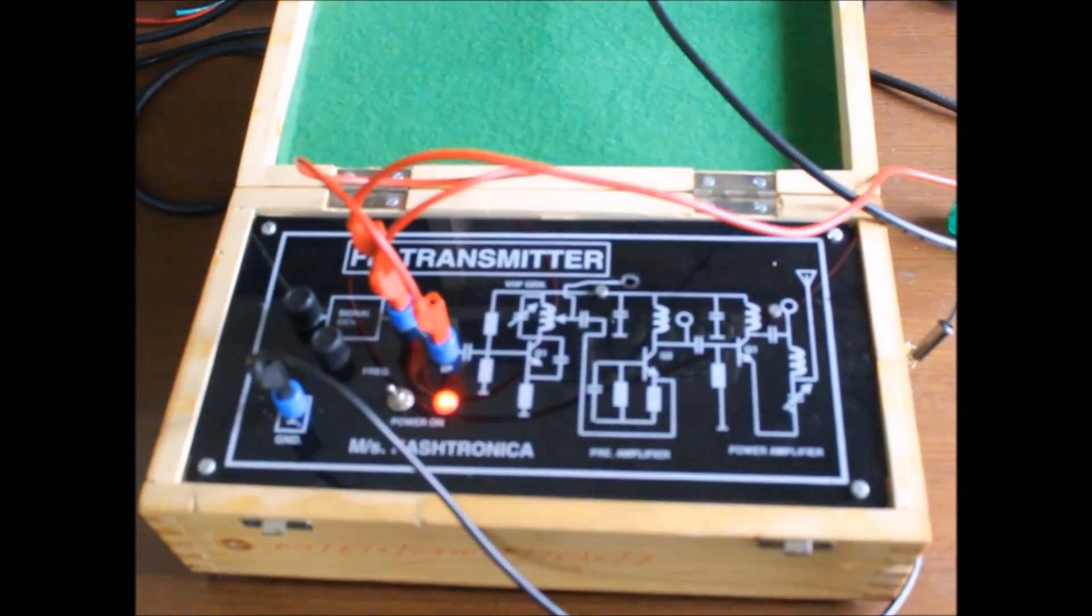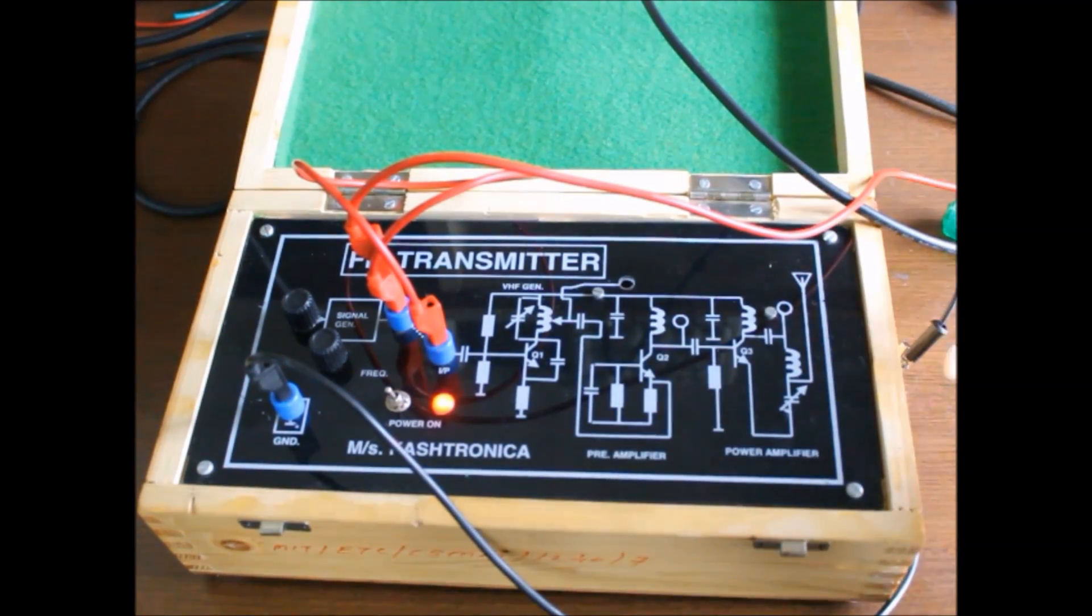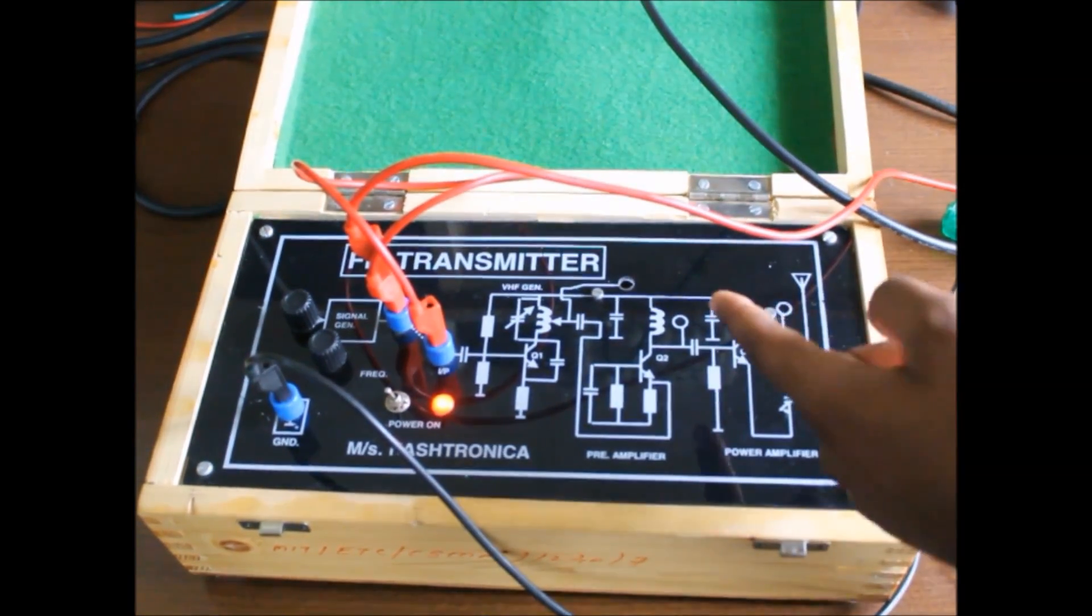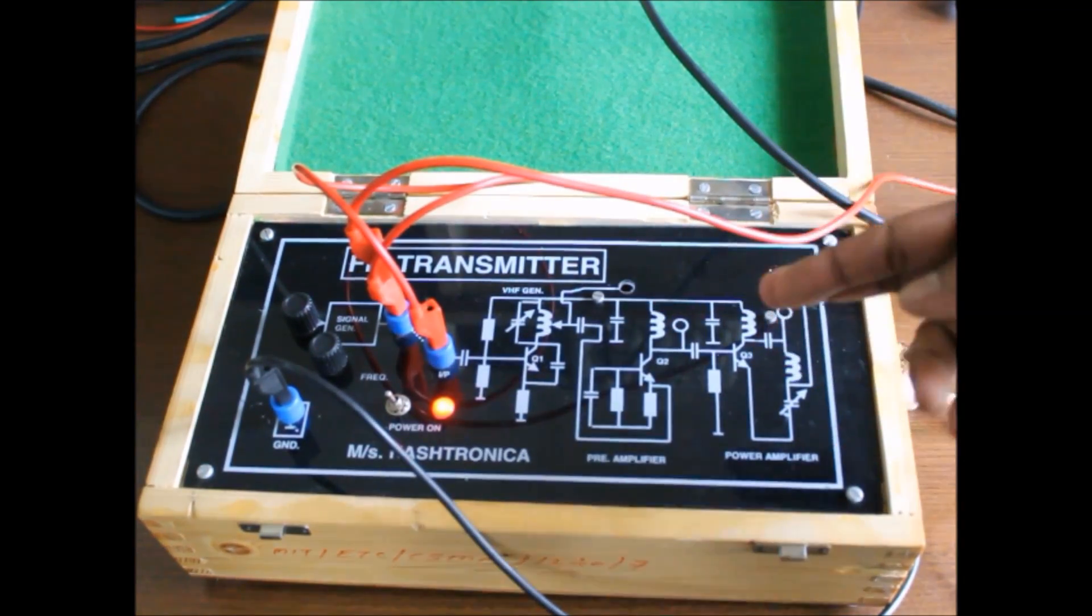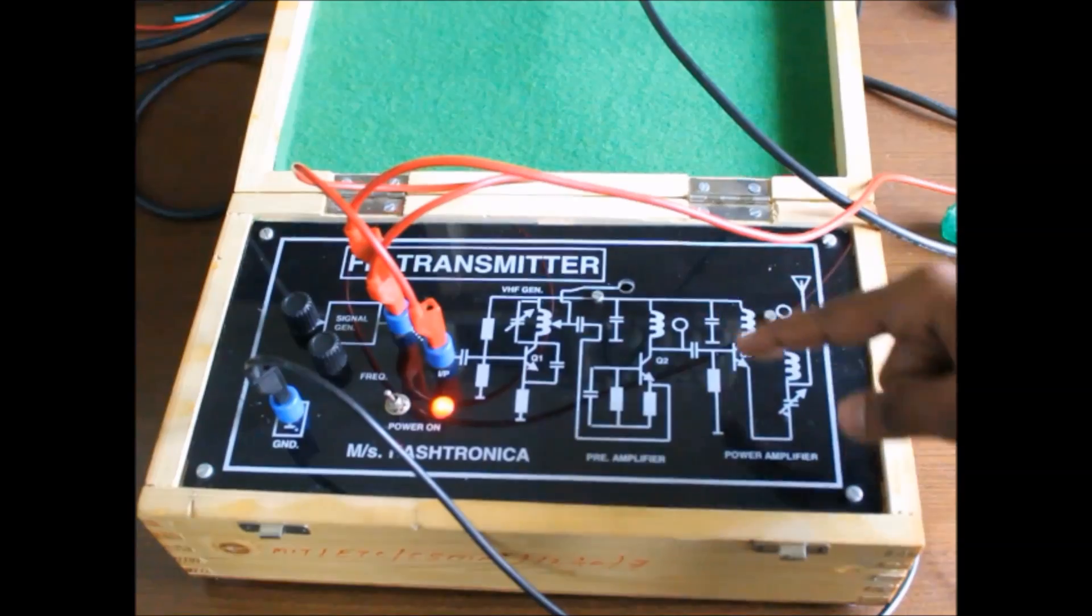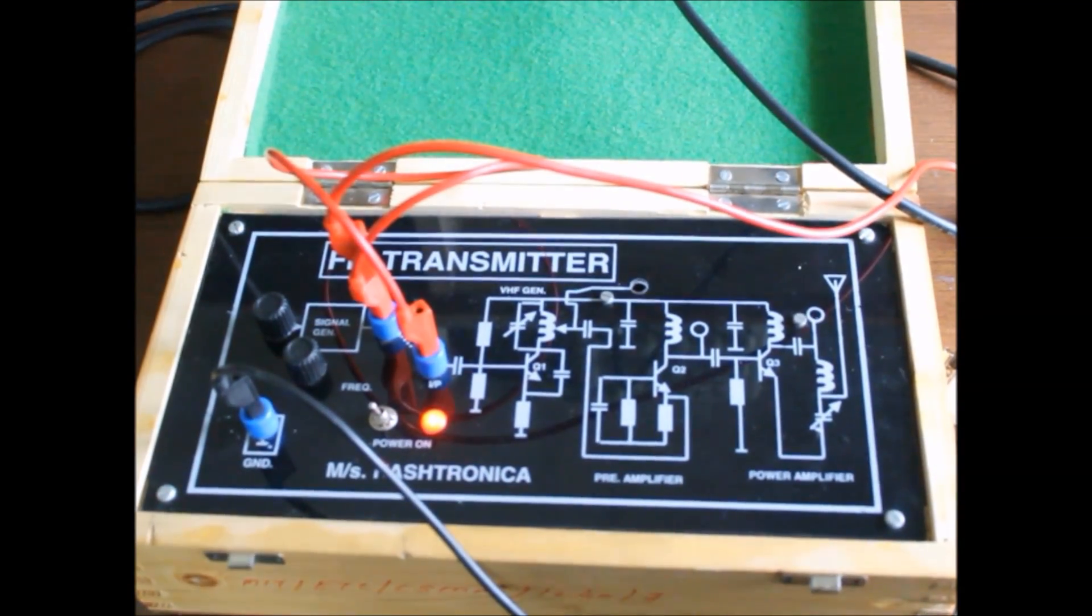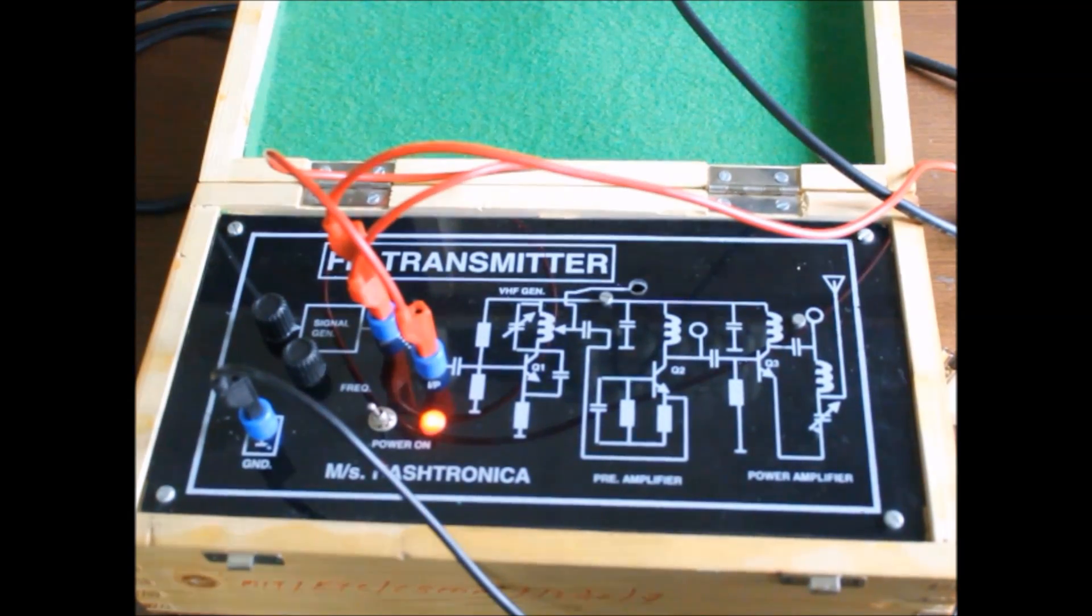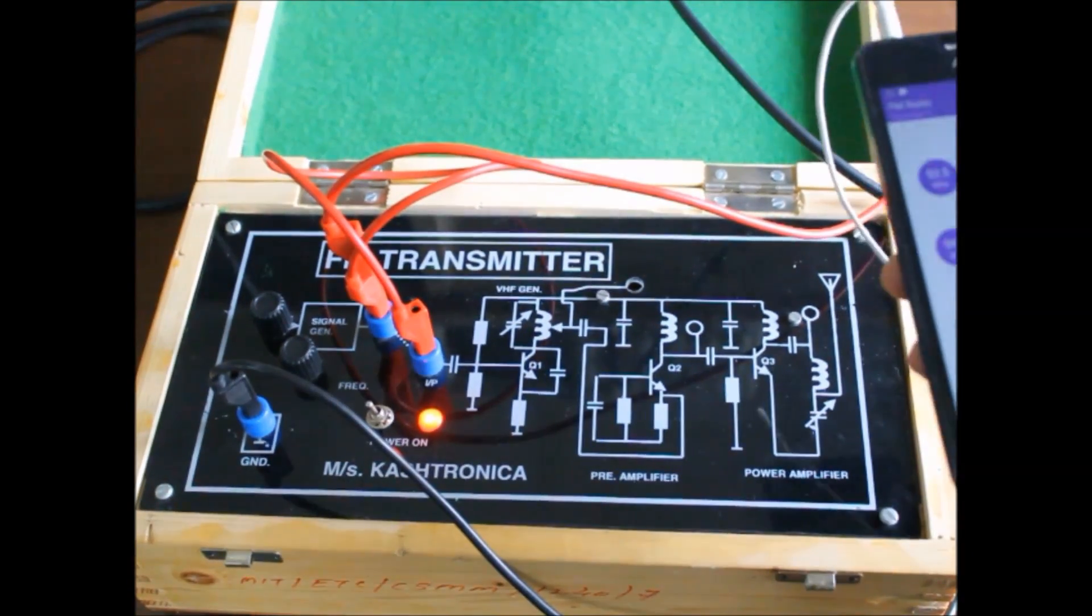And now with the help of a radio, I will detect the signal which we are transmitting. So here there is a capacitor which forms a tank circuit. With the help of that capacitor you can adjust your carrier frequency which should be in the range of 88 MHz to 108 MHz, which is the standard range of FM. So I have adjusted it around somewhere 89 to 90 MHz, so we will just try to detect it onto a radio.